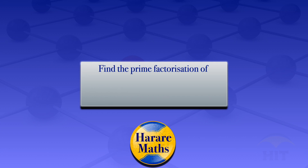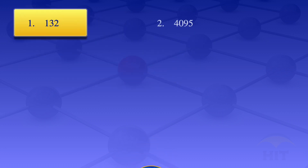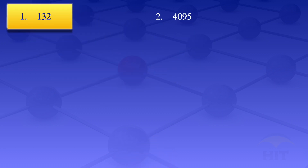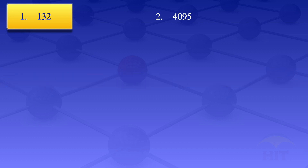In this video I'm going to find the prime factorization of 132, then go on and look at the prime factorization of 4095. Given those are two integers, we want to find the prime factorization. When looking at prime factorization, we want to express a number as a product of its prime factors. So we want to express 132 as a product of its prime factors.